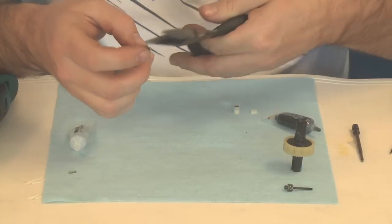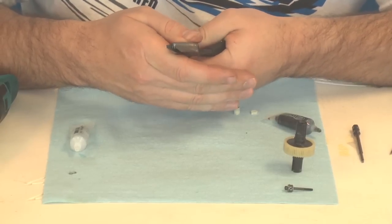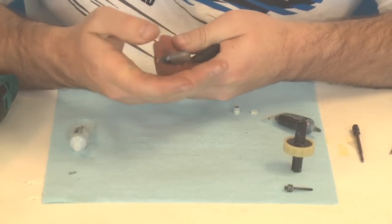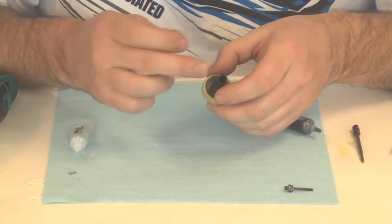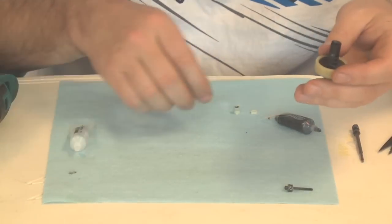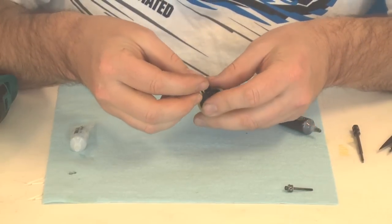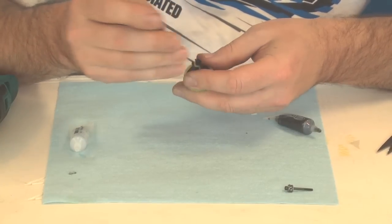Next is the spring. Take a pair of pliers, compress it a few times, break it in a little bit, nothing too crazy. And we look inside the diff halves, the deeper of the two will be where the spring goes. Dump that in there, press that in.